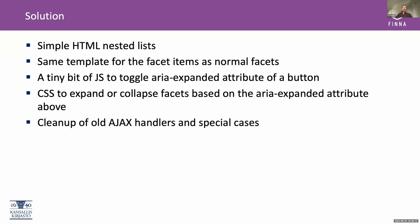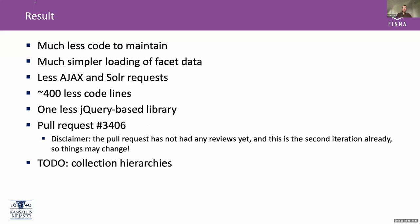Let's go with simple HTML nested lists. Use the same template for rendering facet items as the normal facets do. Add just a tiny bit of JavaScript to toggle an attribute of a button, so we can use CSS to expand or collapse the facet levels based on that attribute. And clean up all of the old AJAX handlers and special cases. The result is much less code to maintain, a simpler way of loading facet data, only one way of doing it, all facet data loaded in one request — less AJAX calls, less Solr requests, less code.